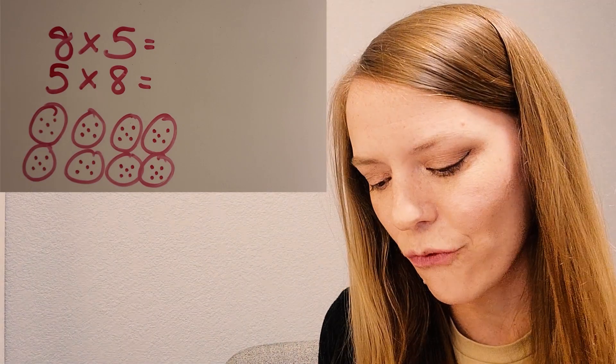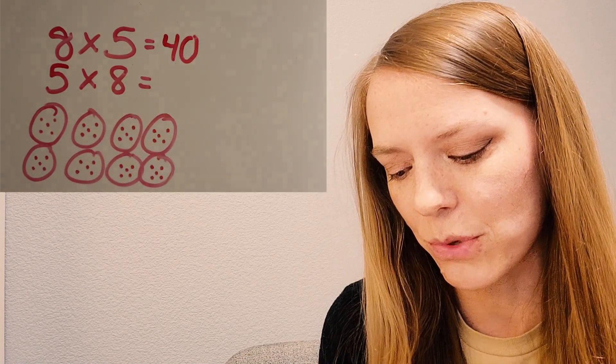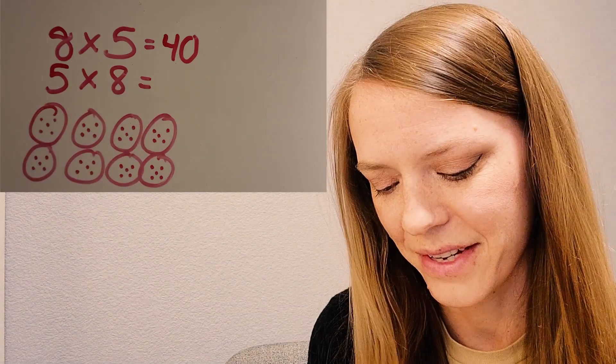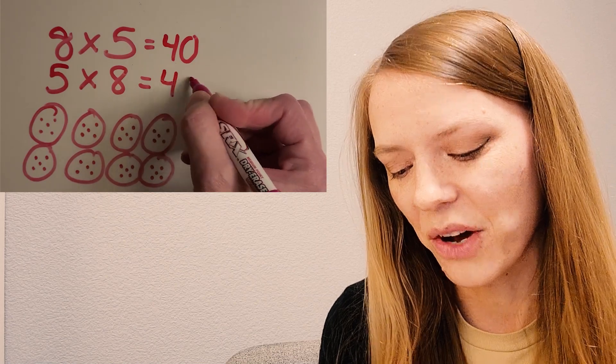Okay, I got 40. So eight groups of five equals 40. What do you think five groups of eight equals? You're right, also 40.